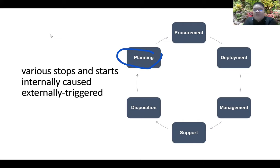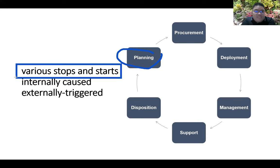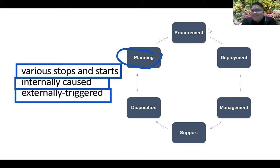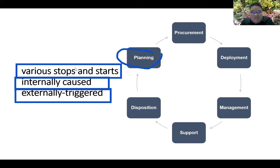If you look at the life cycle of technology, there are various stops and starts, and this is internally or externally triggered. It could be internal — for example, within our hospital we want a change because we notice our machine is already breaking down and needs to be replaced. Or it could be externally triggered — for example, the government mandated that all systems be updated, so we have no choice but to update the system. Or it could be that our supplier changed their machine, so we also need to change ours. That is the life cycle of your technology.